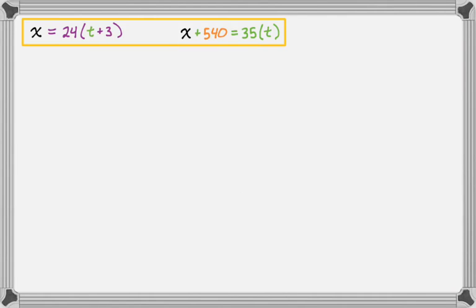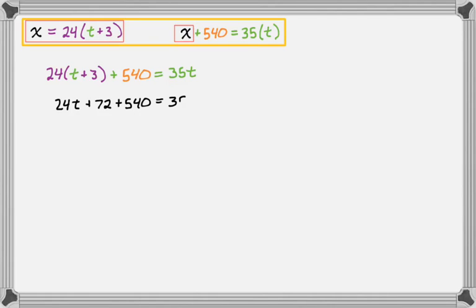These are my equations. If you look at them, the first one is already X is equal to something. So that I'm actually just going to take and plug into the second equation. So I'm going to use substitution on this. So that'll give me 24 times T plus 3 and then plus 540 equals 35T. And now I'm just going to solve this. So I'm going to distribute and then go from there.